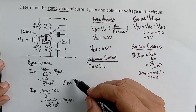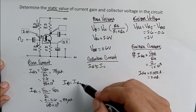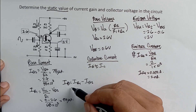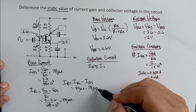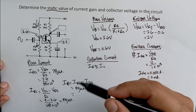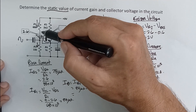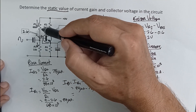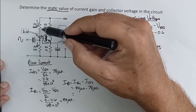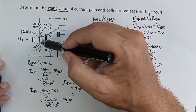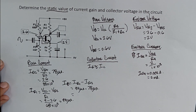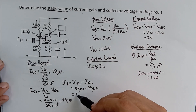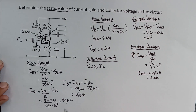The base current is found using Kirchhoff's current law: the sum of currents entering a node equals the sum leaving it. We have 94 microamps flowing in through R1 and 78 microamps flowing out through R2, so the base current is: I_B = IR1 − IR2 = 94 − 78 = 16 microamps.